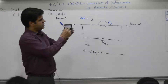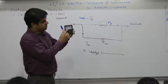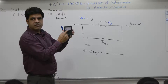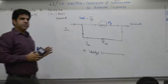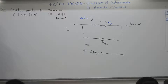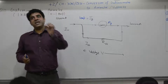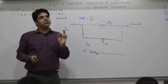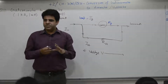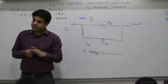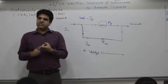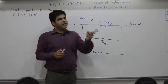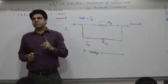When this device gives full scale deflection, maximum current flows in the winding. The maximum permissible current here is 1 ampere. So if you have an ammeter in the lab which can measure only 1 ampere but you need to measure 10 ampere, you can convert the same ammeter from 1 ampere to 10 ampere by doing something.